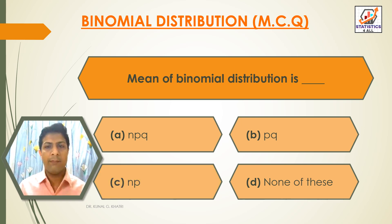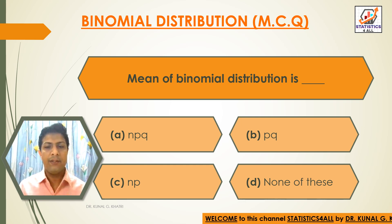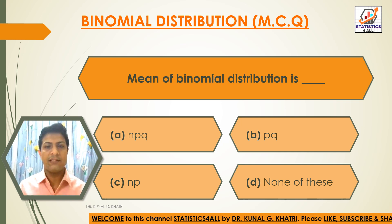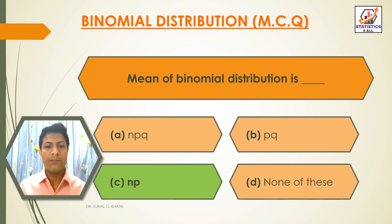Next question: Mean of binomial distribution is dash. Option A: npq. Option B: pq. Option C: np. Option D: None of these. The answer is option C — np. Mean of binomial distribution is np.